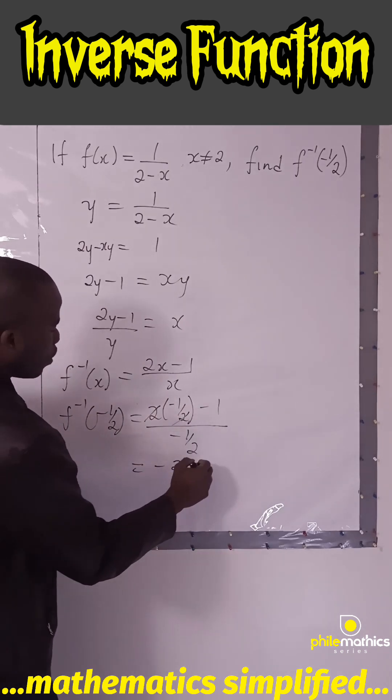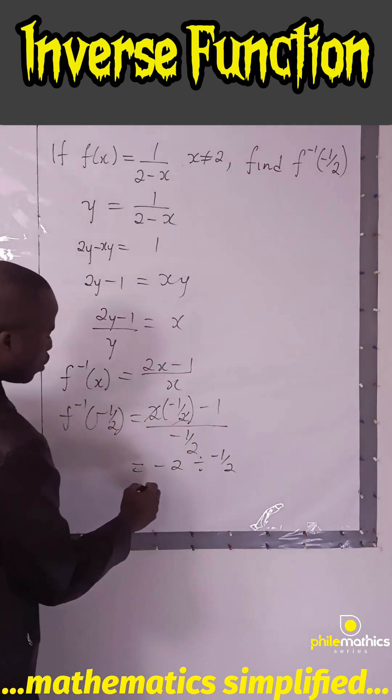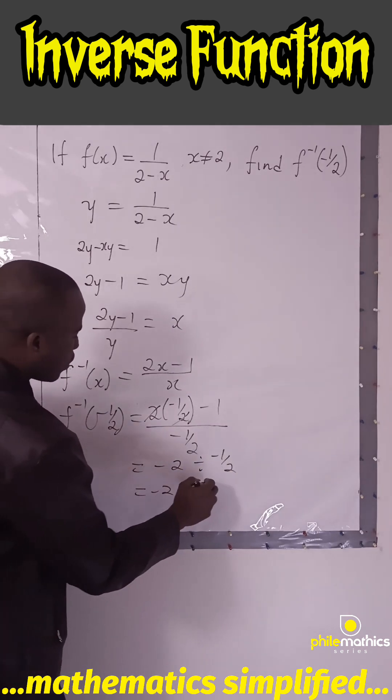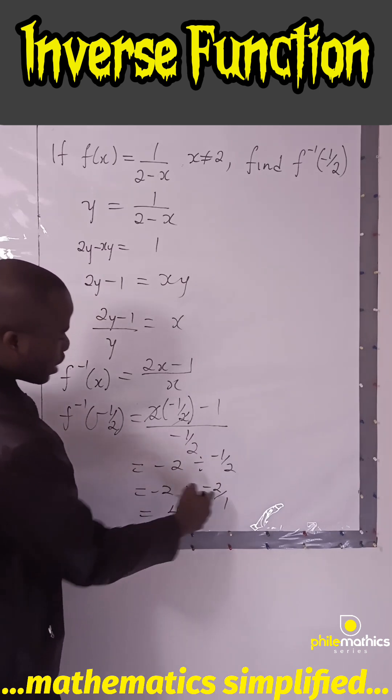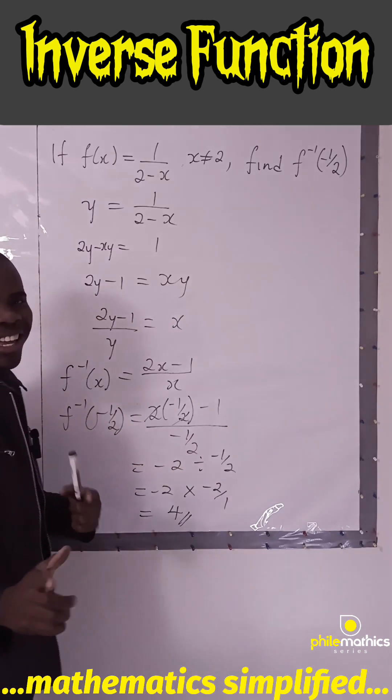This equals -2 × (-2/1), which is 4, because minus times minus is plus. Thank you for watching.